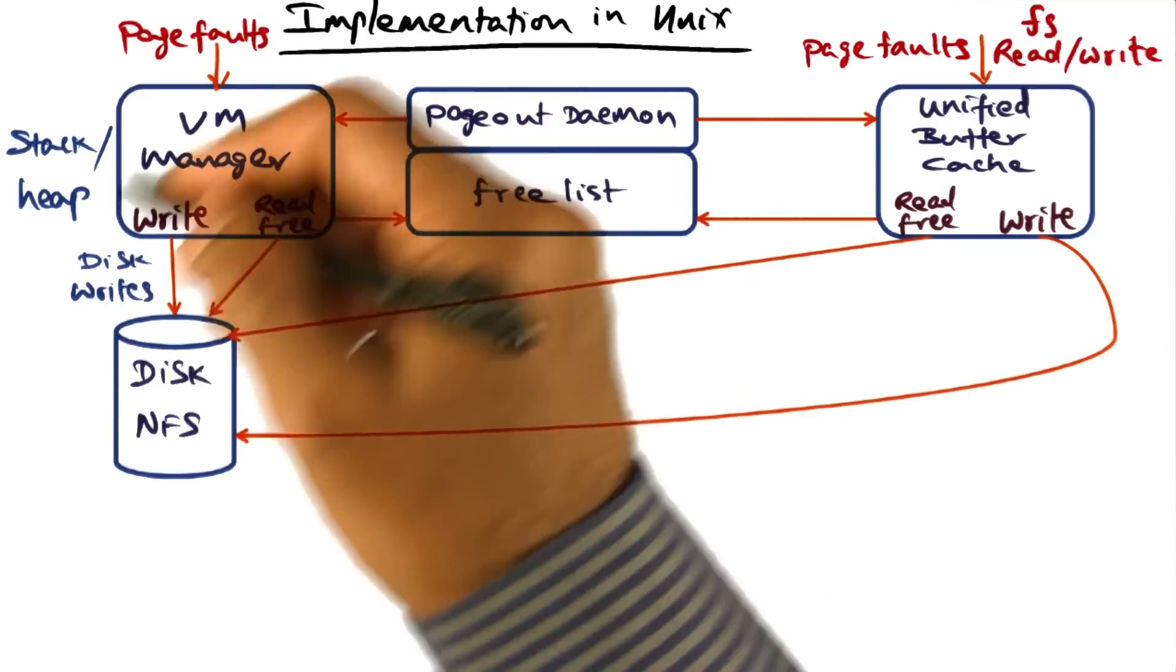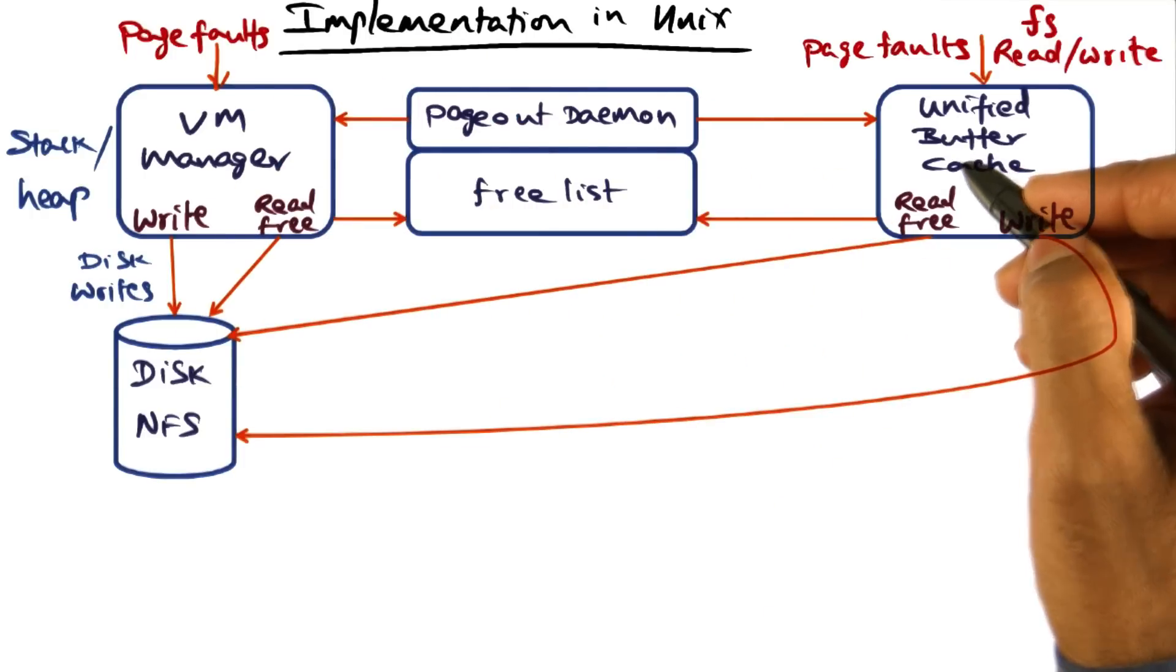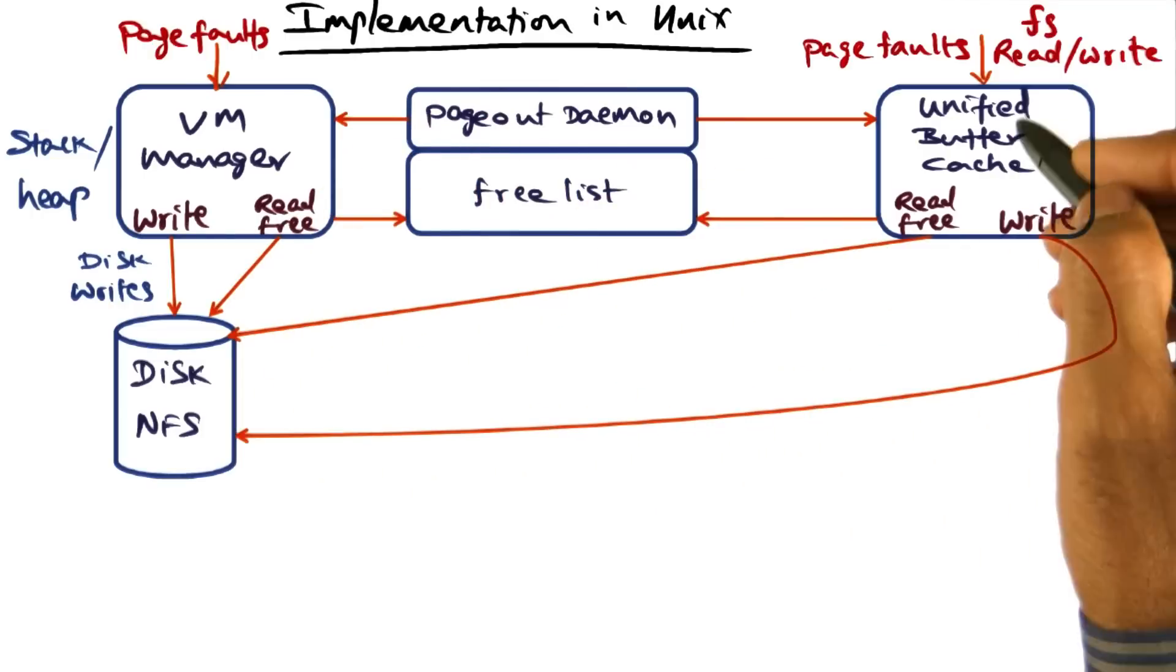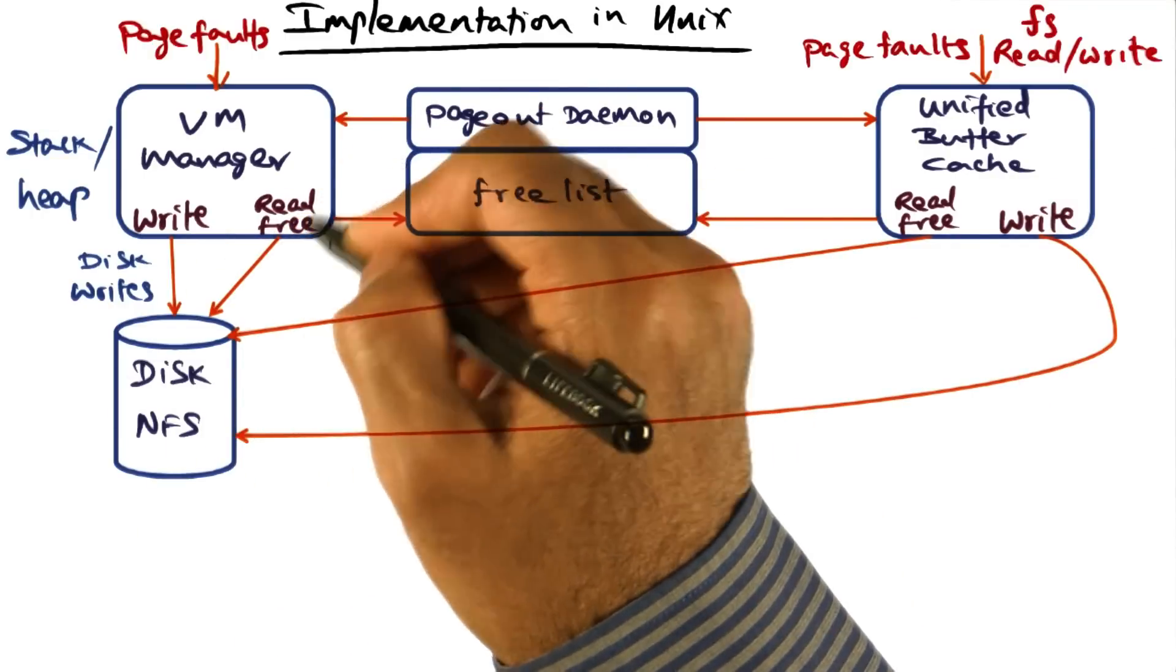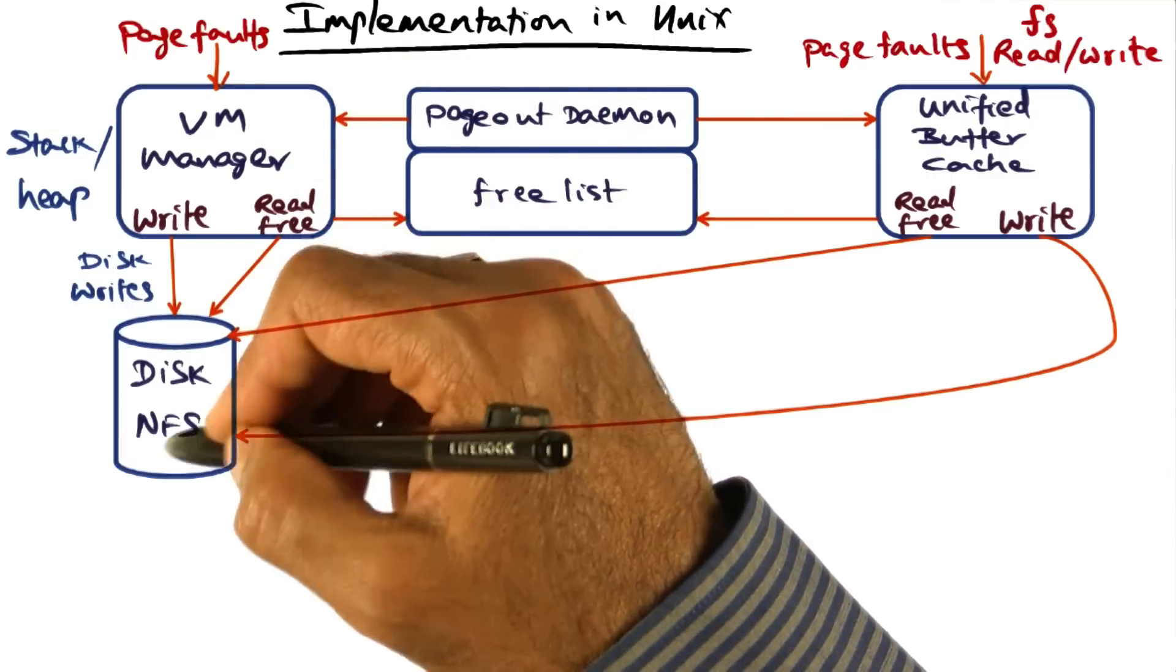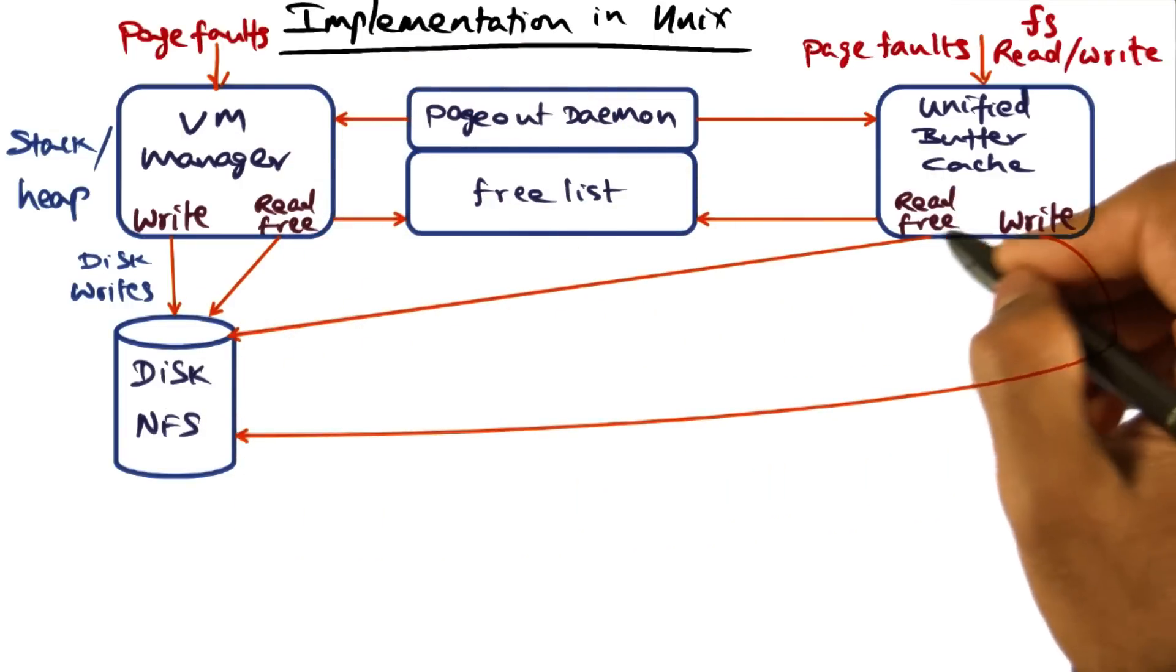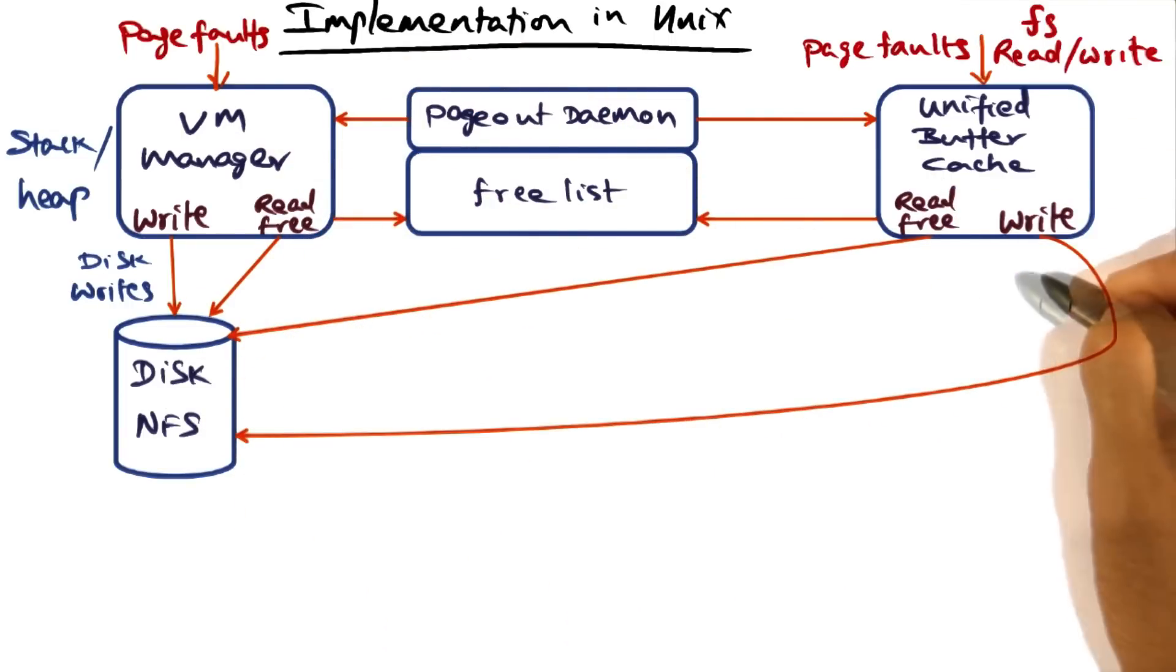So normally, this is the picture of how the memory system hangs together in any typical implementation of an operating system. You have the virtual memory manager, you have the unified buffer cache, you have the disk. And reads and writes from the virtual memory manager go to the disk. And similarly, reads and writes from the unified buffer cache go to the disk.